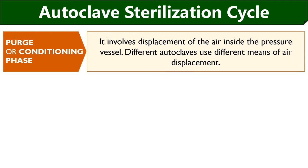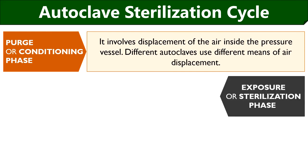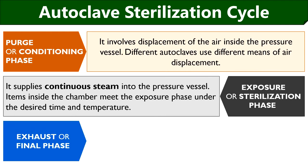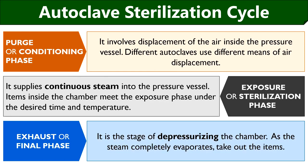Different autoclaves use pressure pulses, steam flushes, or a vacuum pump to displace the air. Then in the exposure or sterilization phase, we need to close the exhaust valve in order to supply continuous steam by switching on the heating element. This causes a rapid increase in temperature and pressure, after which the items placed within the pressure vessel meet the exposure phase. The exhaust phase is the final phase in which we open the exhaust valve to release steam out of the chamber — this is the stage of depressurizing the chamber. As the steam completely evaporates, the items can be taken out.